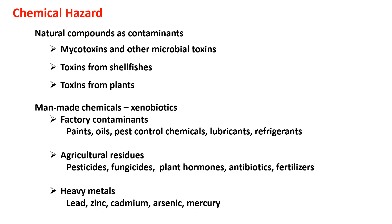Chemical hazards include natural compounds such as mycotoxins, toxins from shellfish, and toxins from plants — these are released by the food itself. For example, shellfish poisoning syndromes include paralytic, diarrheal, and neurotoxic effects. This is why shellfish should be consumed very cautiously.